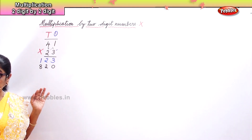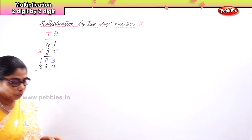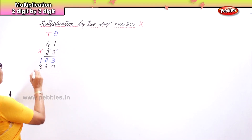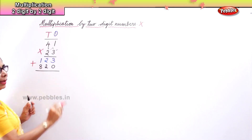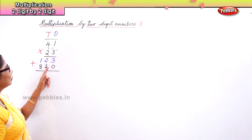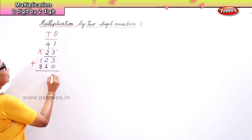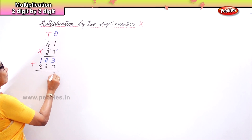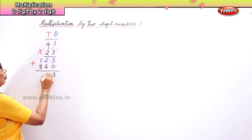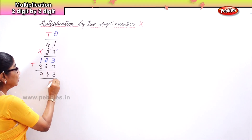Next, two into four — two fours are eight, so we put 8. Now we have to add the two rows together. Three plus zero is three, two plus two is four, eight plus one is nine. So the answer is 943.